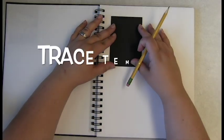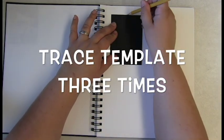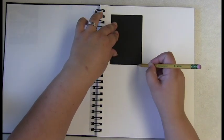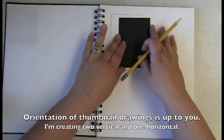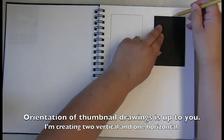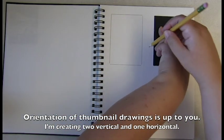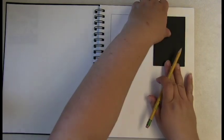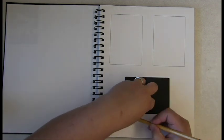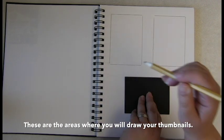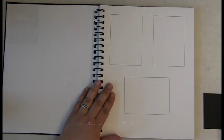In your sketchbook, skip at least one page. You're then going to take the template, trace it three times. I'm going to do two vertical, one horizontal. These are the areas where your thumbnails are going to be drawn.